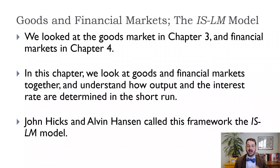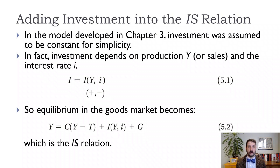We want to take the IS model from the goods market and the LM model from the financial market. To do that, we first need a more detailed view of the IS market. In chapter 3, investment was fixed — we assumed it was exogenous and didn't depend on anything within the model. But now in chapter 4, we've introduced the idea of the interest rate.